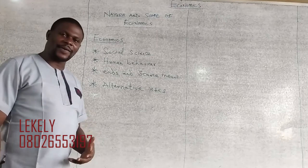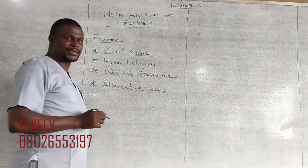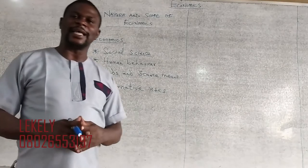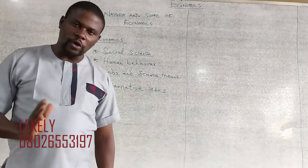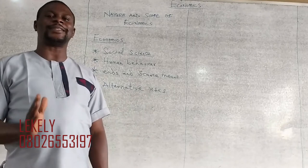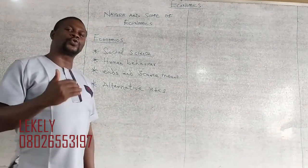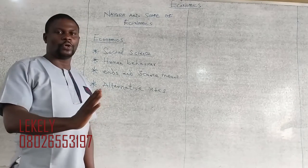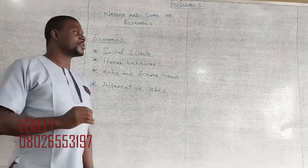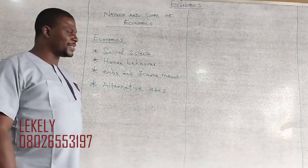The question we are going to ask ourselves is: why is economics a science? Anything being a science means that there is a methodology that is followed. There is a system, a pattern of doing that thing. Because anything you want to study in economics, you must follow a method or pattern. That is why economics is a science.